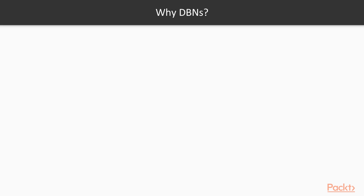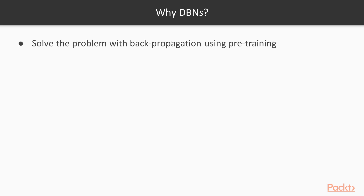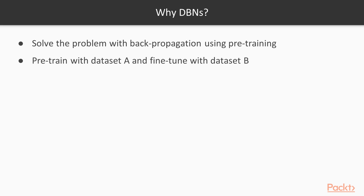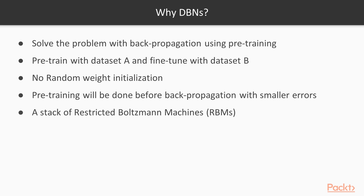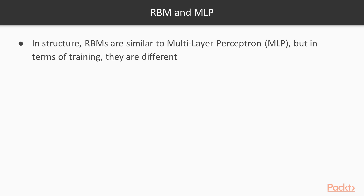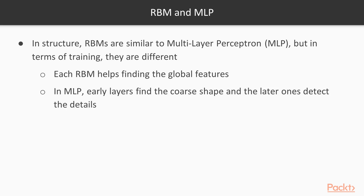Why should we use Deep Belief Networks, or DBNs? DBNs solve the problem with backpropagation using pretraining. We should pretrain with dataset A and fine-tune with dataset B. In that case, weight initialization would not be random anymore. If we stick to using backpropagation and perform pretraining before that, the error would be much smaller than when the weights are selected randomly. DBNs are considered as a stack of Restricted Boltzmann Machines, or RBMs. In structure, RBMs are similar to multilayer perceptron, or MLP, but in training they are different. Each RBM helps find the global features, while in MLP, early layers find the coarse shape and the later ones detect the details.